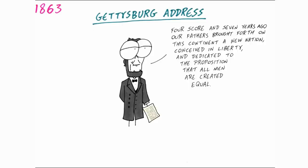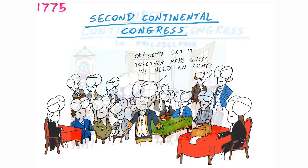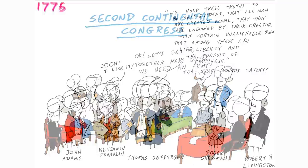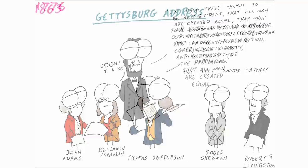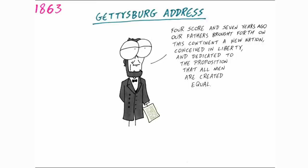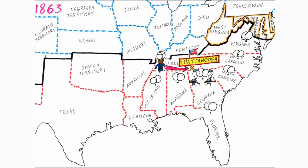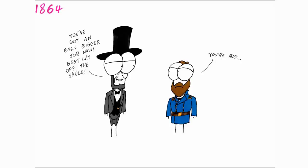In November, Lincoln spoke at Gettysburg and recalled back to the foundation of the United States: "Fourscore and seven years ago, our fathers brought forth upon this continent a new nation, conceived in liberty and dedicated to the proposition that all men are created equal," and how this nation shall have a new birth of freedom. Grant then relieved besieged Union forces at Chattanooga, pushing Confederacy forces out of Tennessee, leaving Union forces looking at the heartland of the Confederacy.